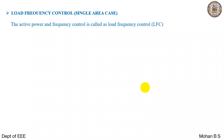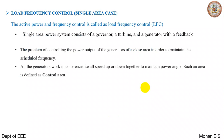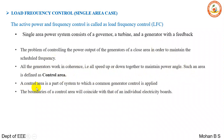The active power and frequency control is called load frequency control, also known as automatic generation control. A single-area power system consists of a governor, turbine, and a generator with a feedback loop. The problem involves controlling the power output of a generator within a closed area to maintain scheduled frequency. All generators work in coherence — speeding up or down together to maintain power angle — and such an area is defined as a control area.